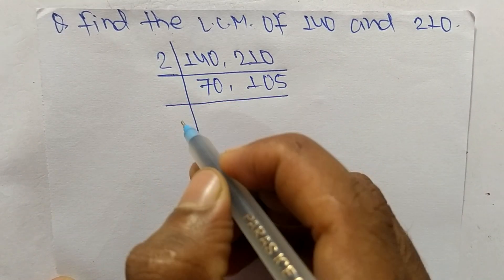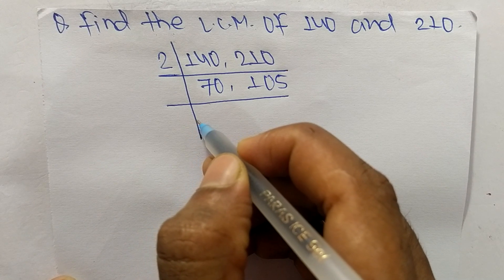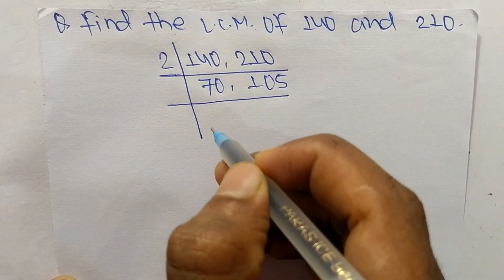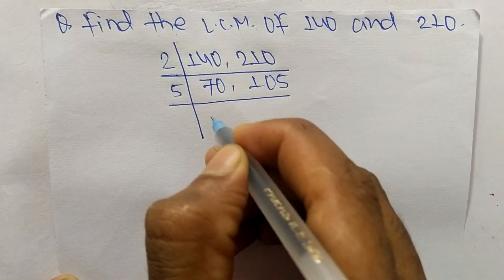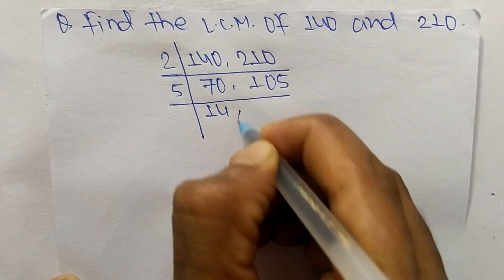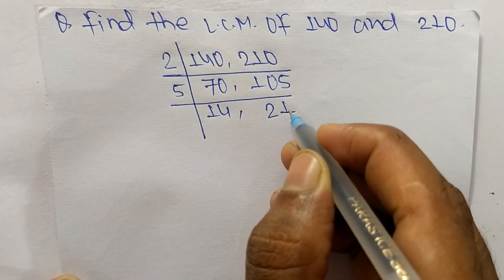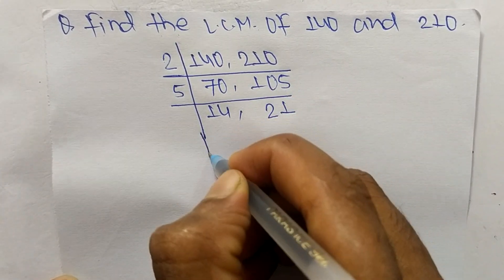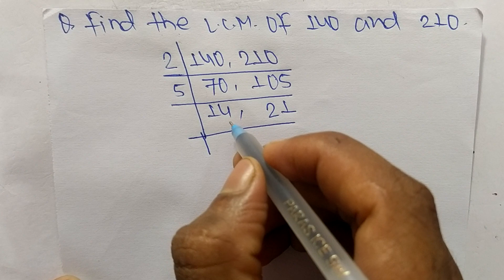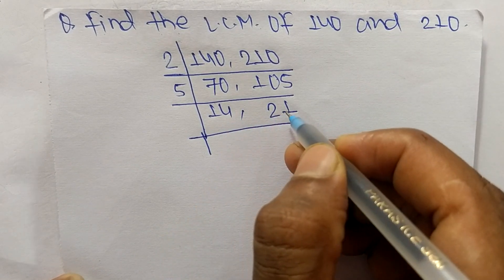choose the number greater than 2 that can exactly divide 70 and 105. The number is 5, so 5 times 14 means 70, 5 times 21 means it is 105. Now 5 can't exactly divide 14 and 21